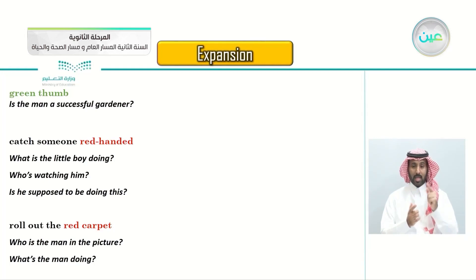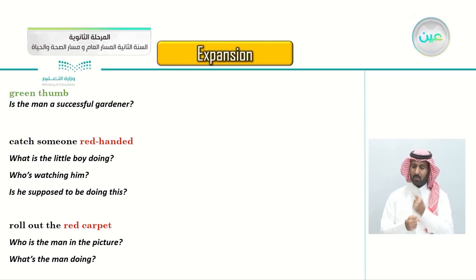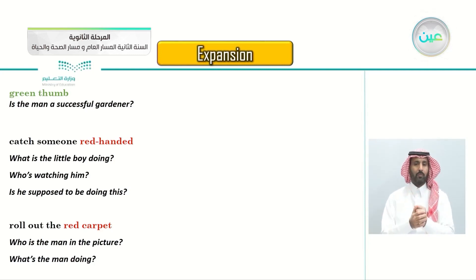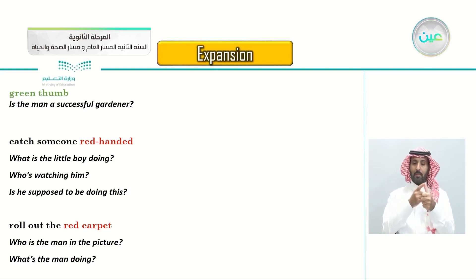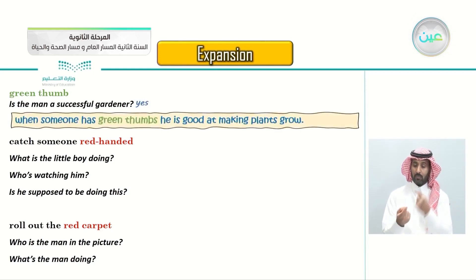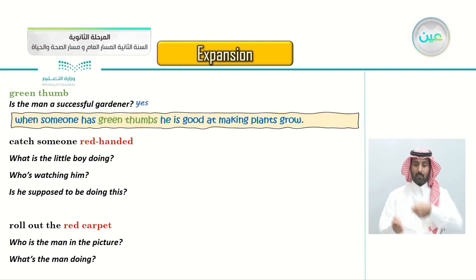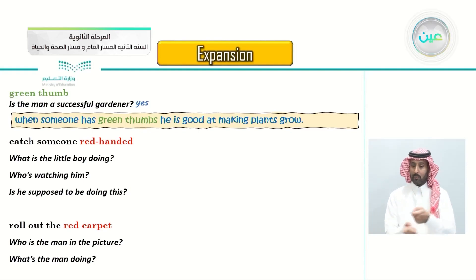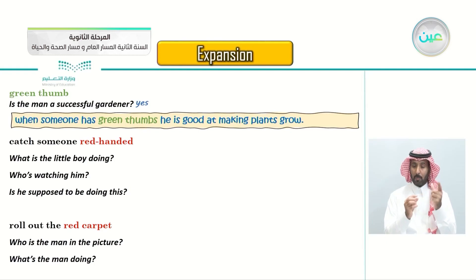Green thumb - is the man a successful gardener? This is the green thumb. You know the thumb - when they say this man has a green thumb, is the man a successful gardener? Yes. When someone has a green thumb, he is good at making plants grow, so he is a good farmer or gardener.